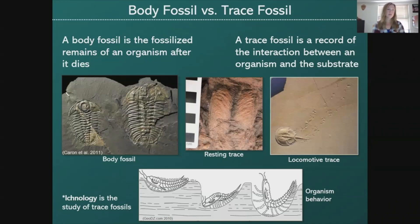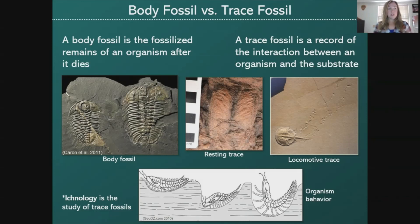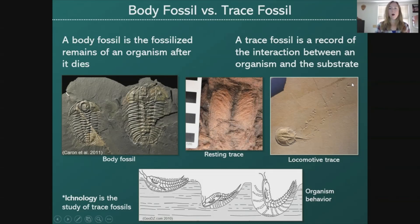I'll be talking about body fossils and trace fossils, so it's important to understand the difference. A body fossil is essentially the fossilized remains of an organism after it dies — you can study the anatomy of the organism, which helps to classify it. A trace fossil is a record of the interaction between an organism and the sediment it was walking around in, so you can study the behavior of an organism when it was alive. Like this locomotive trace showing a horseshoe crab walking along the sand — the footprints are the trace fossil, while the horseshoe crab itself is the body fossil.